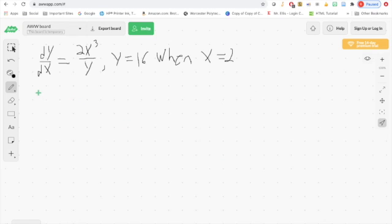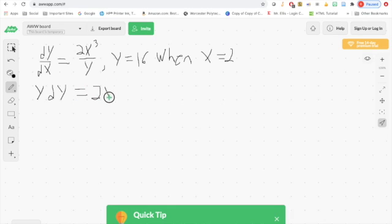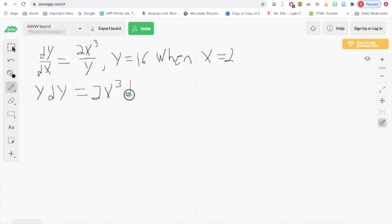Let's start by separating the variables. If we bring the y's over to one side, we have y dy. Keep the x's on the other side, we have 2x cubed dx, and there's our big separation of variables step to get us started.